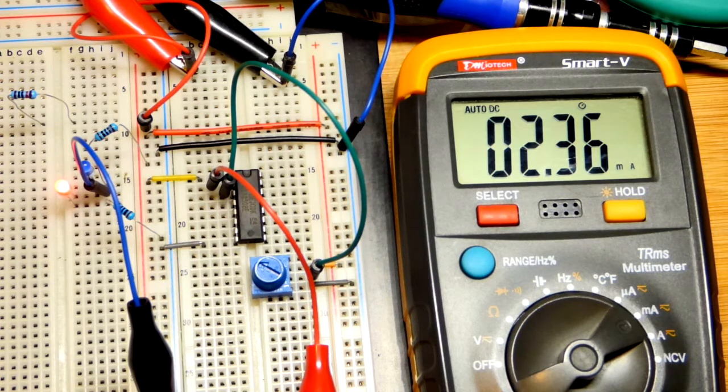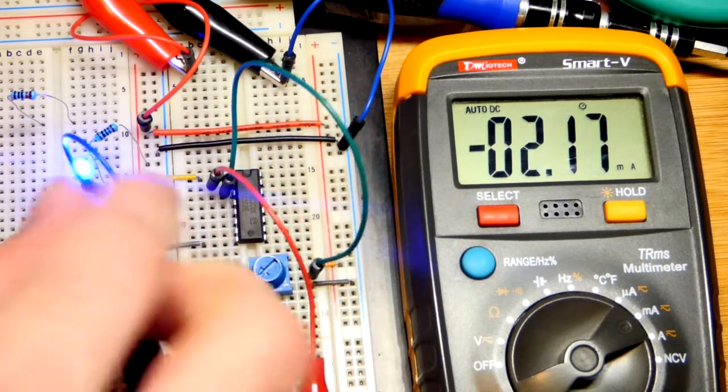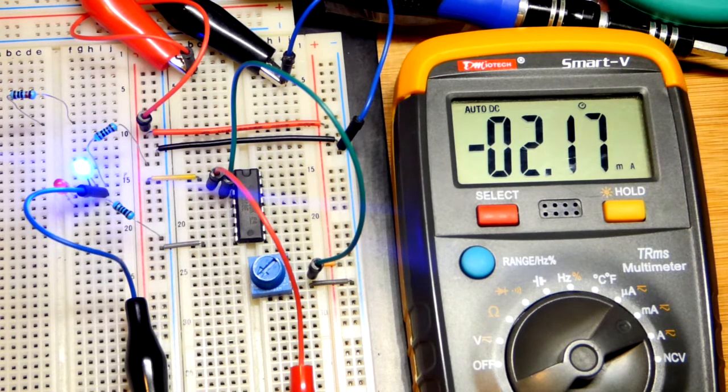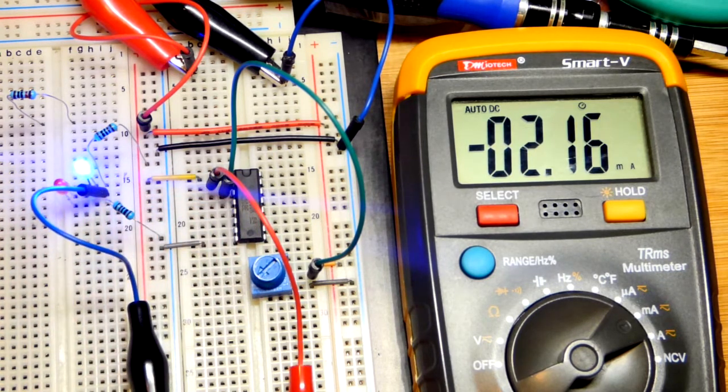We got a negative current. Now let's turn the trim pot down so that the blue LED turns on. Now you can see a negative current. That means this side is more negative, that side is more positive.